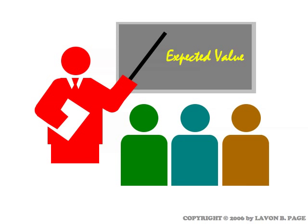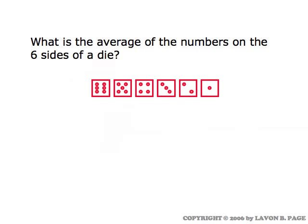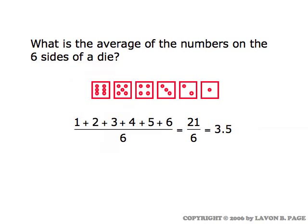Expected value is the averaging process that's used when you're talking about probabilities. Think about the numbers that appear on the sides of a die. There are six numbers. What's the average of all those numbers? If you add up the numbers on the die and divide by how many of them there are, which is six, you get twenty-one over six, or three and a half as the average of the numbers on the die.